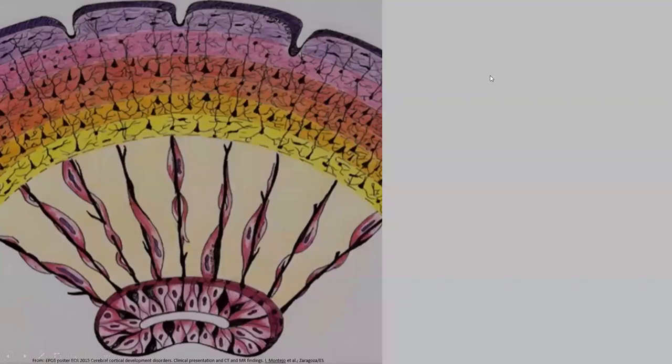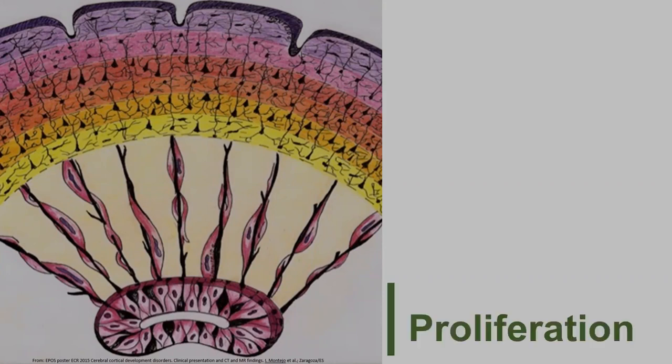To understand what kind of cortical malformations exist and why they look the way they do, it's important to have a notion of the process of normal cortical development. Normal cortical development consists of three phases. The first phase is so-called neuronal proliferation — the development of neurons in the germinal matrix, which is basically the place where neurons develop, grow, proliferate, and multiply, situated along the primitive lateral ventricles.